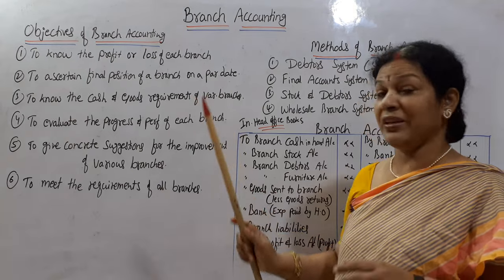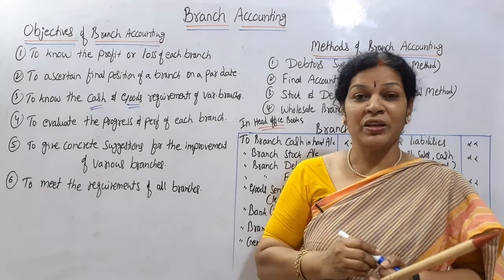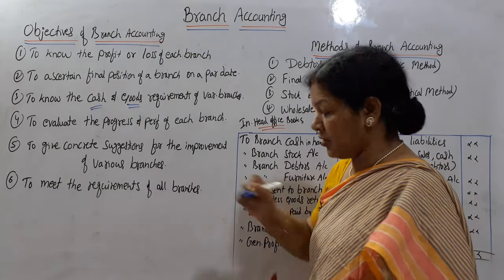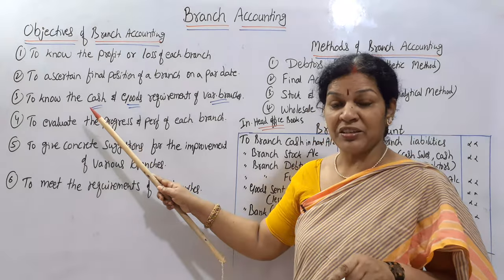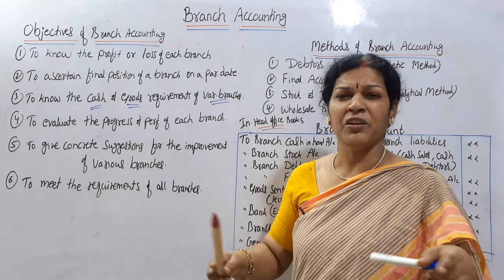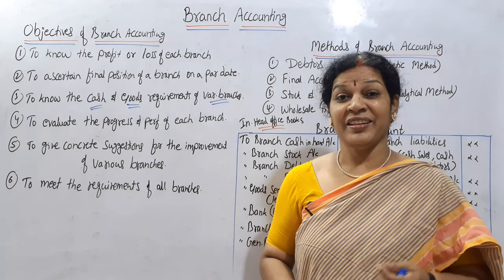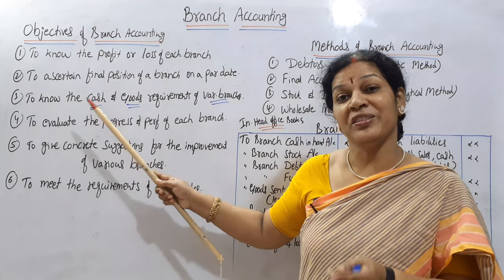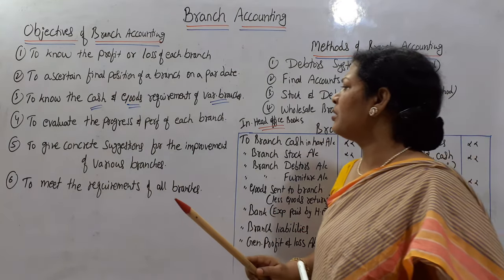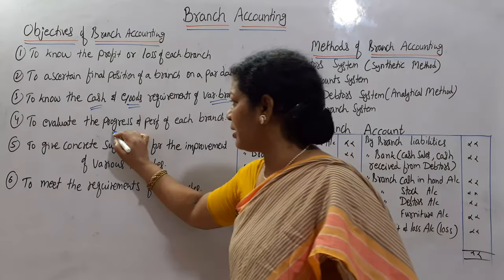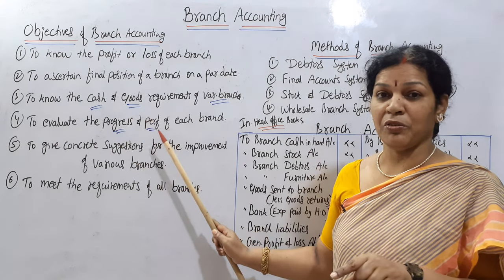Third objective is to know the cash and goods required by various branches — how much cash is required, how many goods are required. This will come to know through branch accounts. Suppose we have five branches; each branch's point of view — how much cash is left, how many goods are required. Goods are sent by the head office to the branch offices, almost similar to consignment. Fourth, to evaluate the progress and performance of each branch — their position and performance will be known branch-wise.